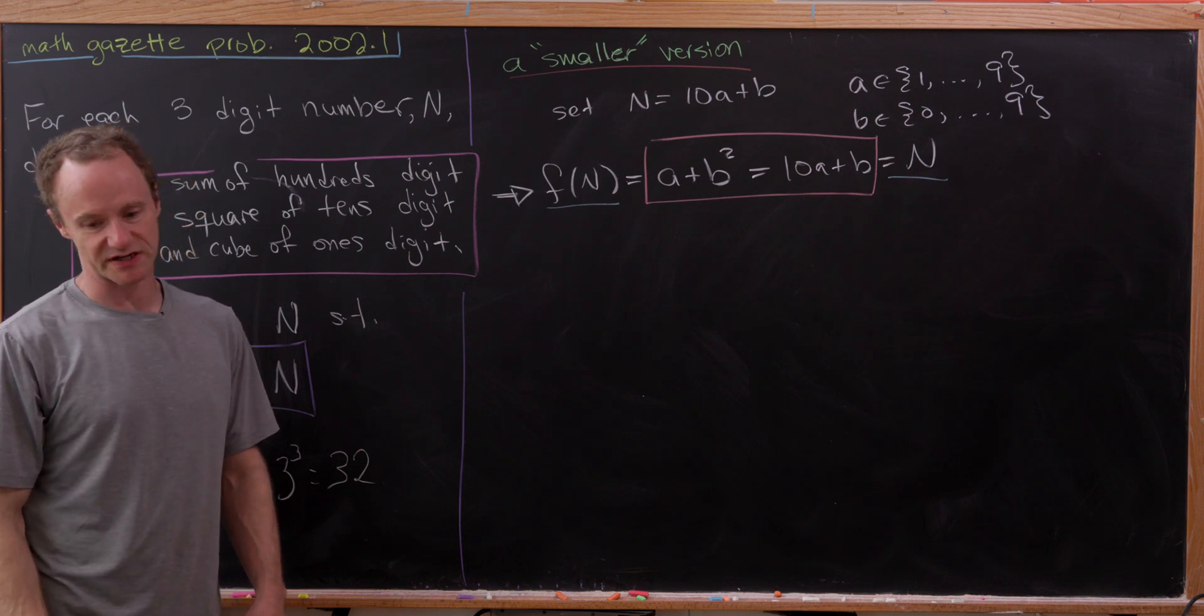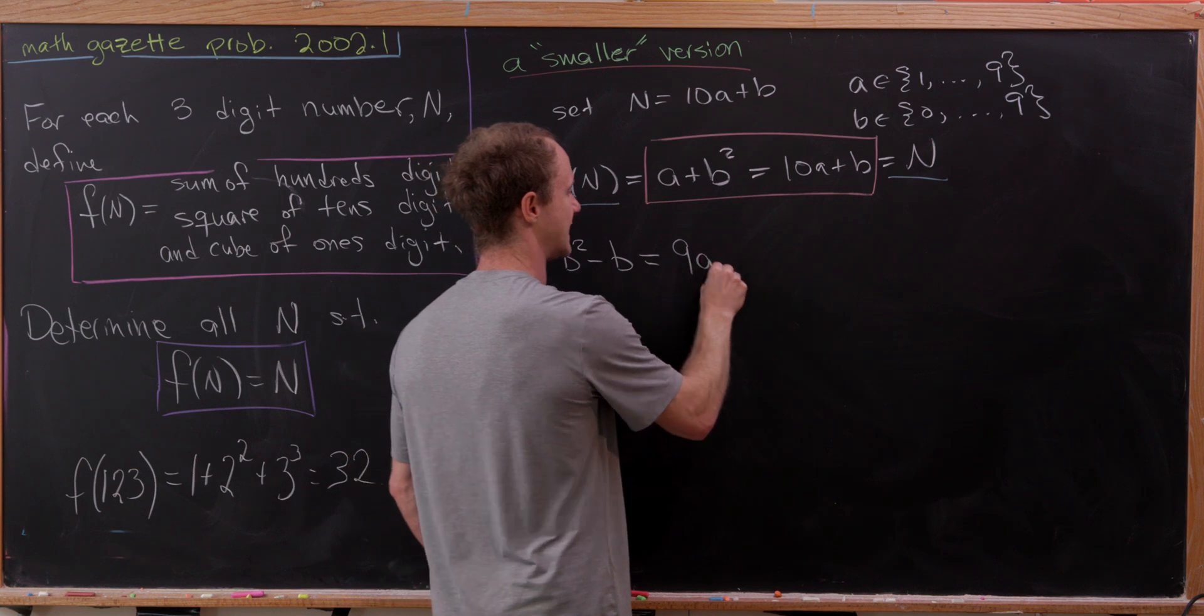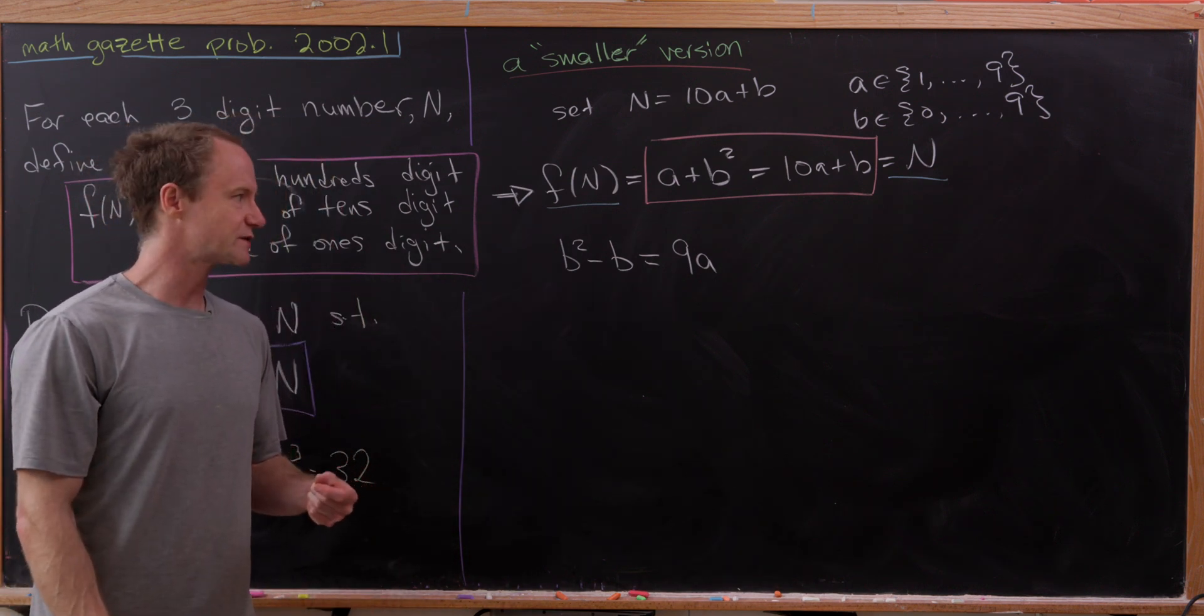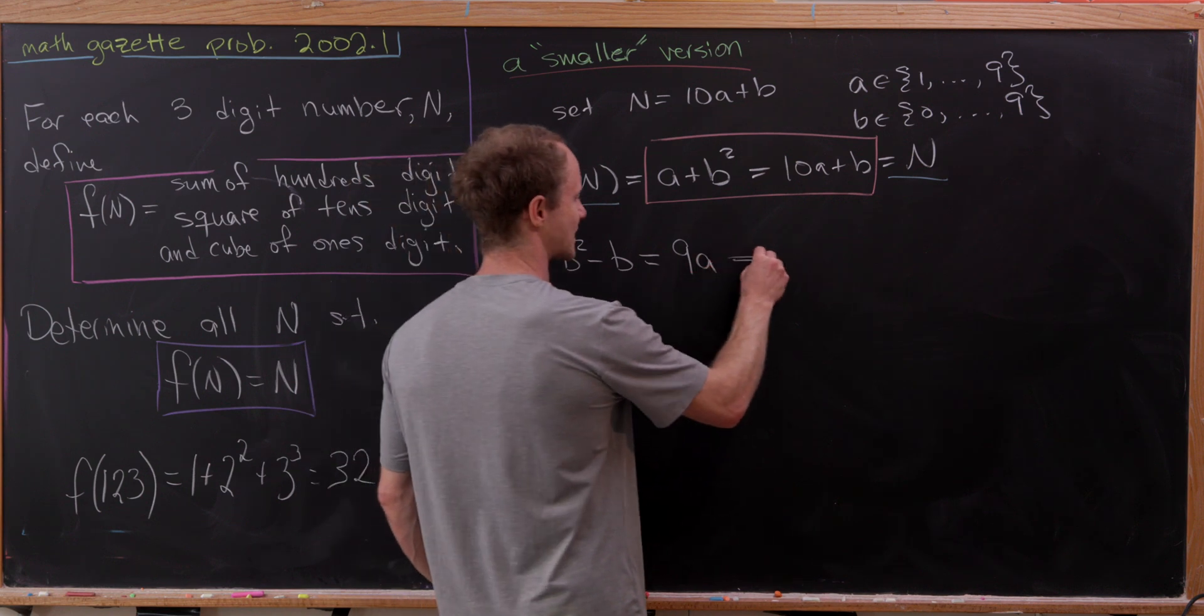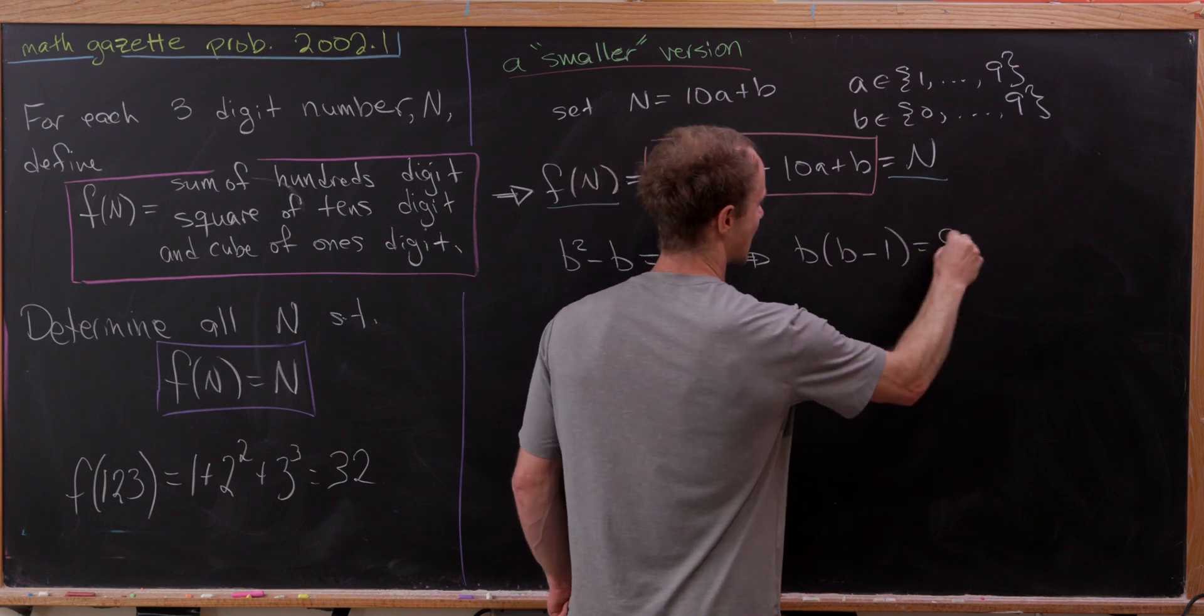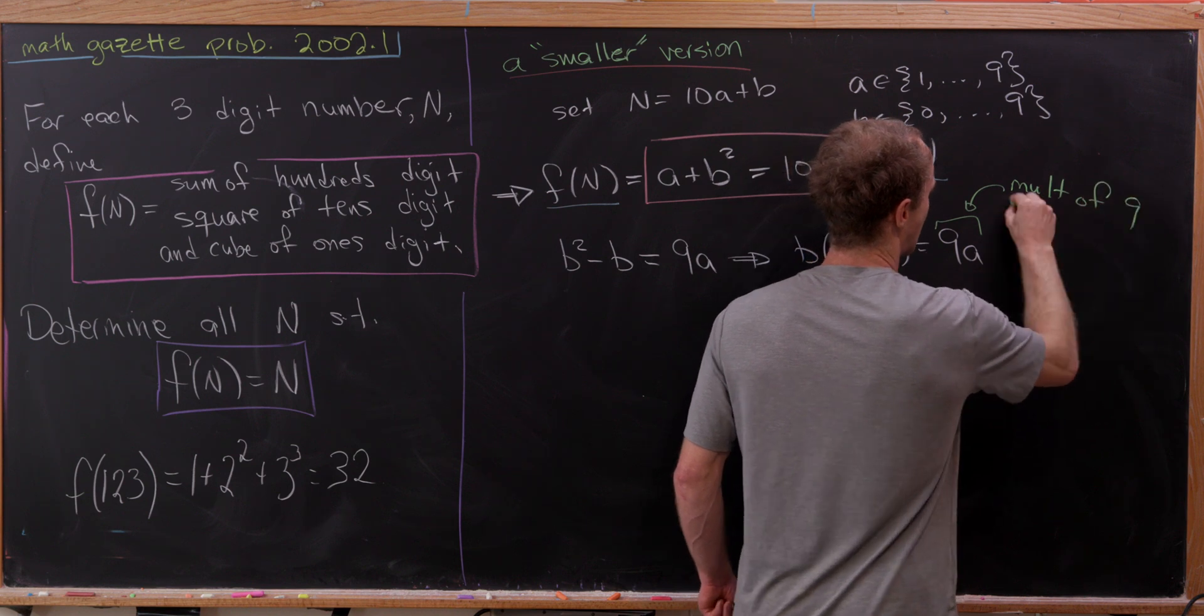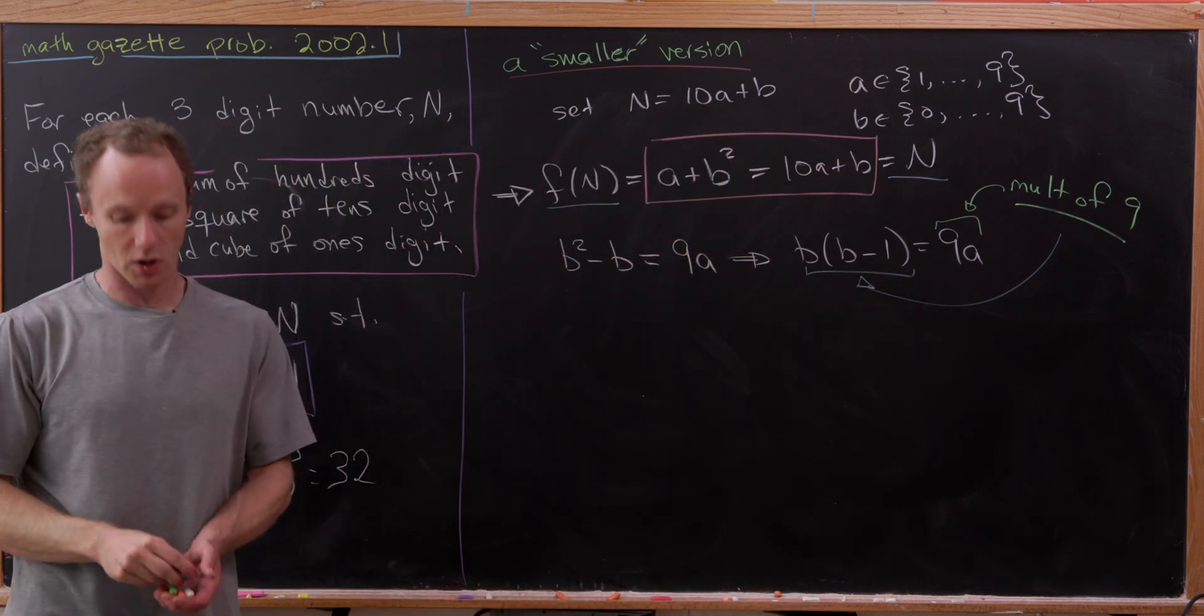So what do we think the strategy is? Well, perhaps we'll move this b over, and we'll see that we have b squared minus b is equal to 9 times a. This left-hand side kind of factors in an obvious way. Observe that this left-hand side is b times b minus 1, and we have that as 9 times a. And importantly, 9 times a is a multiple of 9.